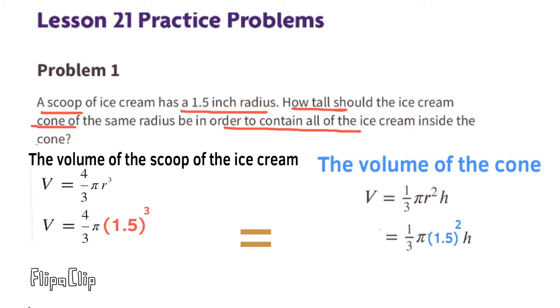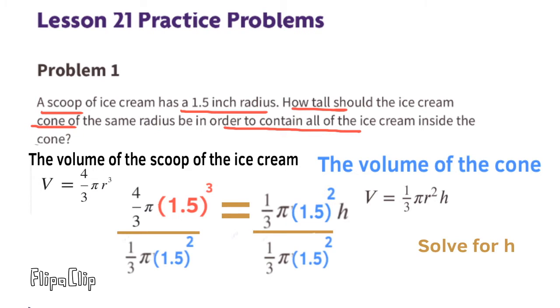Next, we set it up so we can solve for H, the height of the cone. Since we need to get H by itself, we need to divide both sides by 1 third times pi times 1.5 squared. That will leave us with H on the right hand side, the height of the cone.